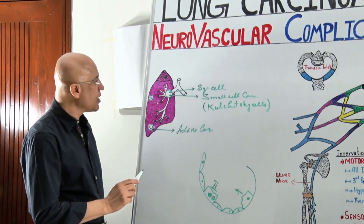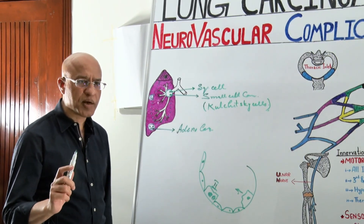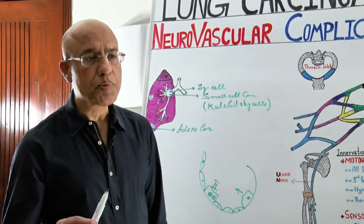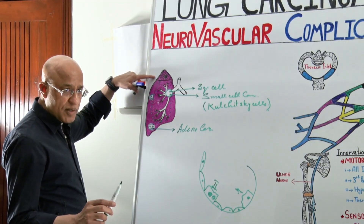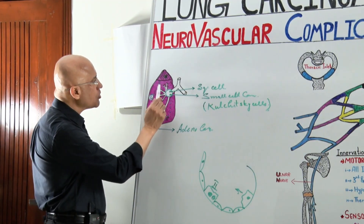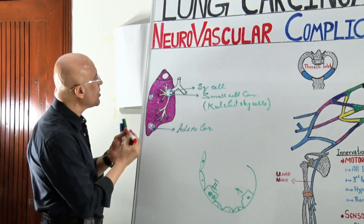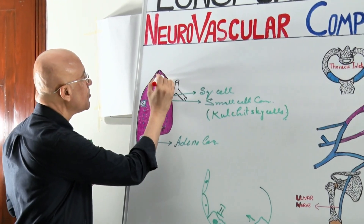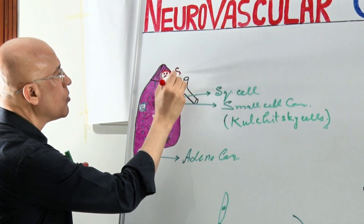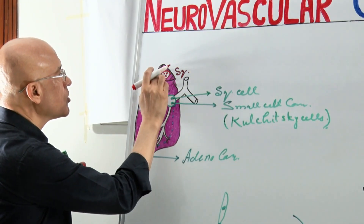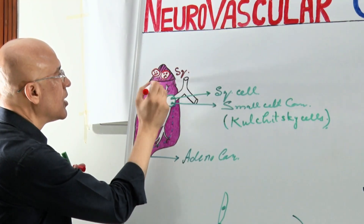Even though most commonly we classify lung carcinomas according to histopathology, Pancoast tumours are very different. There are two types of Pancoast tumours most commonly: squamous cell carcinoma, which is very commonly found there, and the other very common tumour in that region is adenocarcinoma.